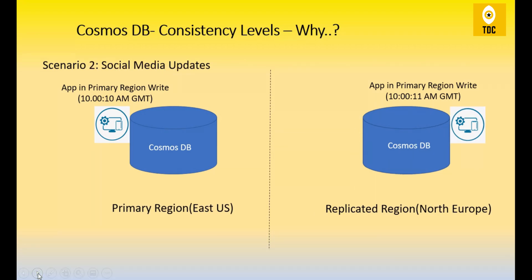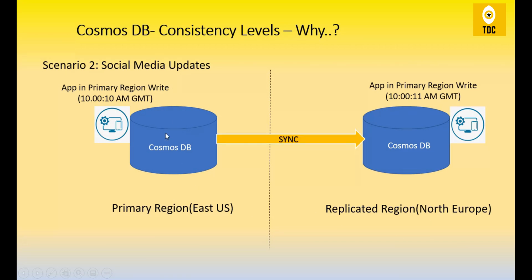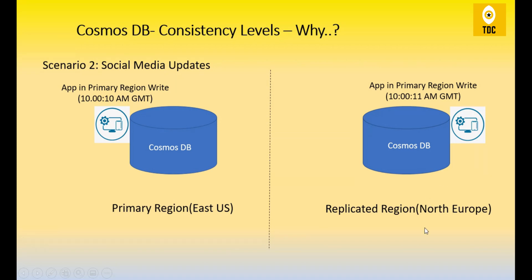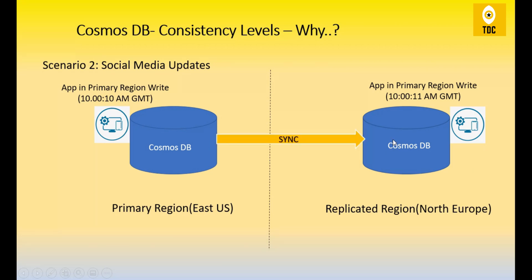Now let's take a second example: social media, like Instagram, Facebook, or LinkedIn. Suppose someone posts on Facebook in the primary region East US, and that post is replicated to North Europe. If they edit the post at the 10th second, I don't need to wait for that edited record to sync — I can still view the old post at the 11th second, because this is just social media with no business-critical requirement.